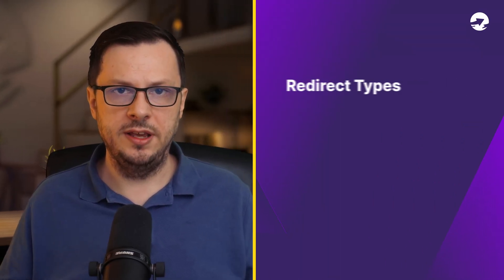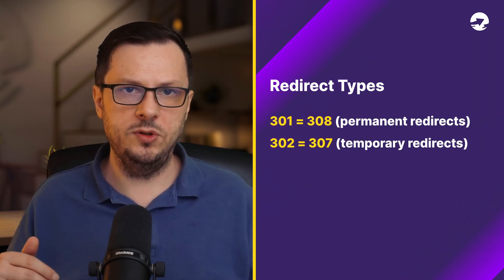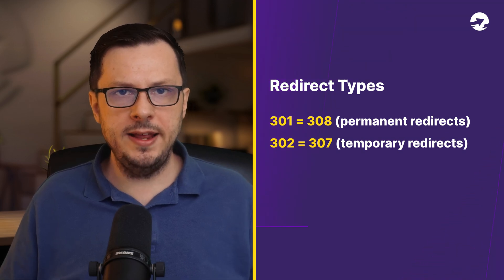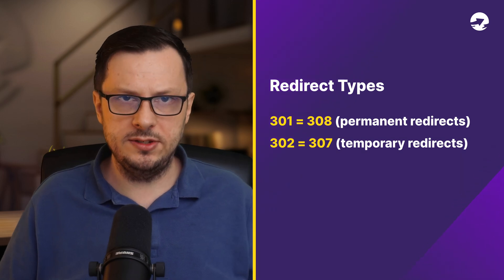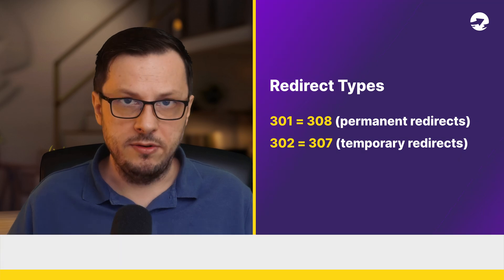You may also see 307 and 308 redirects sometimes. They are usually used in shop CMSs based on JavaScript frameworks, which we will cover in the CLX Academy lessons. Essentially, the 308 redirect is the equivalent to a 301 redirect — they are both permanent redirects. And a 307 redirect is the same as a 302 redirect — both are temporary redirects.